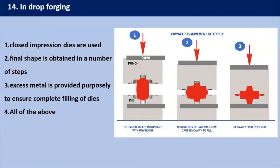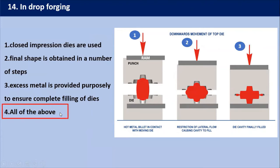In drop forging, you can achieve a closed die impression. The final shape is obtained in a number of steps — you won't get it directly; it's step by step. Excess metal is provided purposely to ensure a complete filling of the die. All these conditions are satisfied in drop forging, so our answer is all of the above.